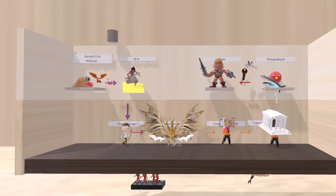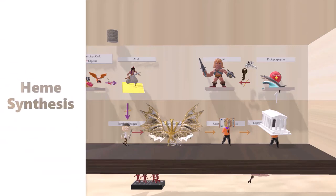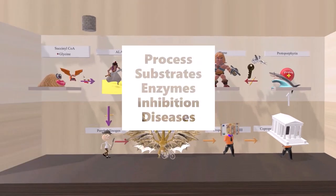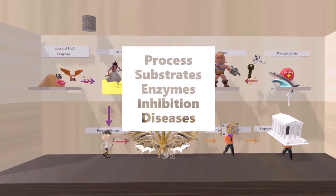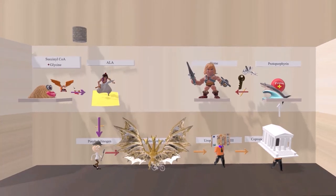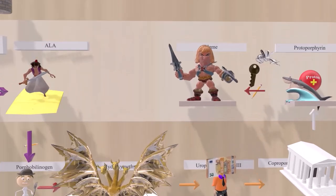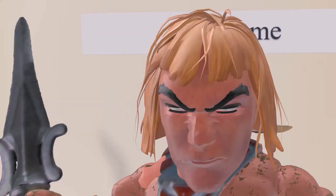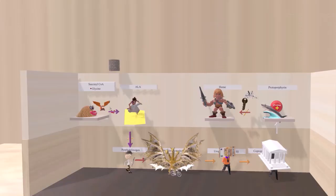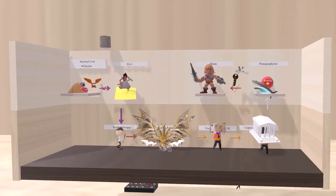In this scene we're going to have a ton of fun learning everything we need to know about heme synthesis — the process, substrates, enzymes, inhibition, as well as diseases associated with this process. We're here in the he-man factory, where they produce the he-man, representing heme. Let's talk about the process of how the factory makes the he-man, and through that we'll learn how to make heme.